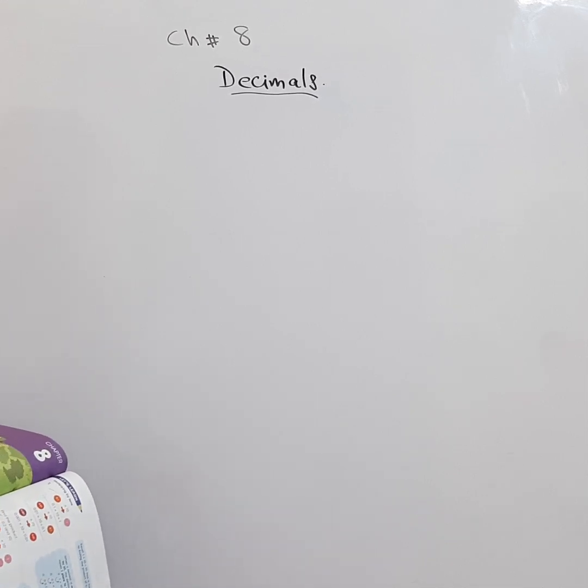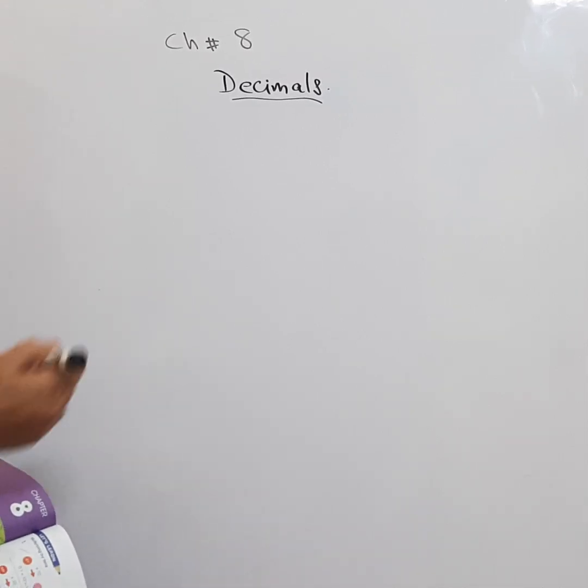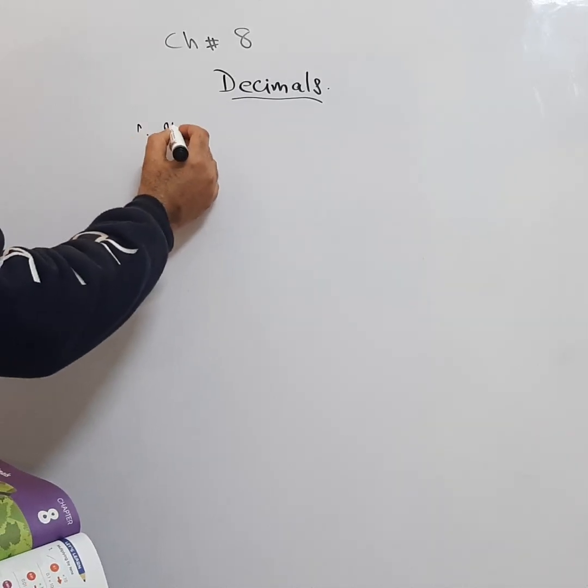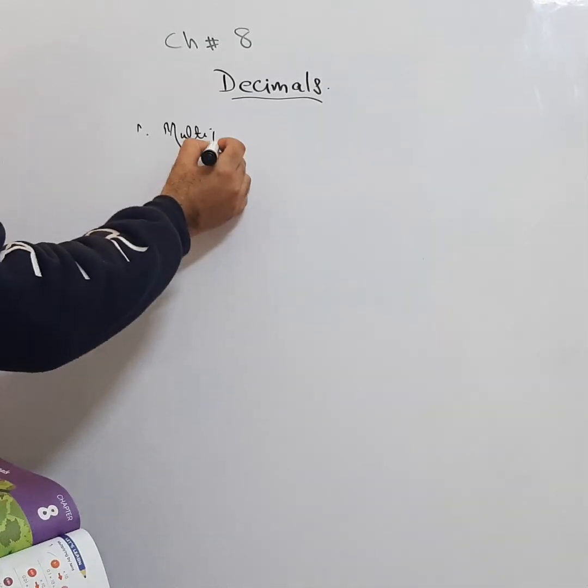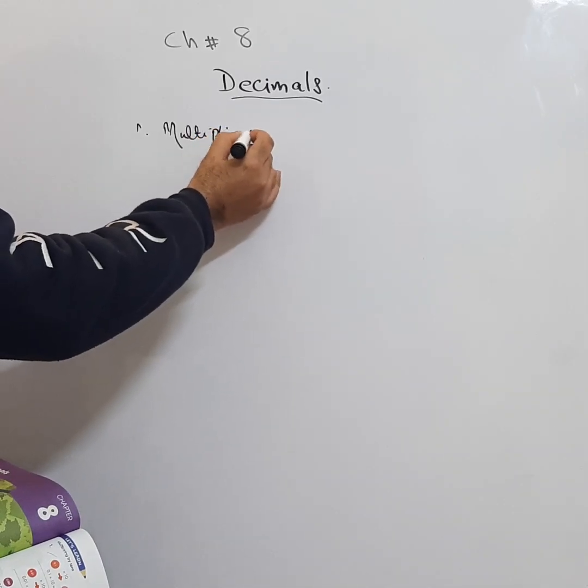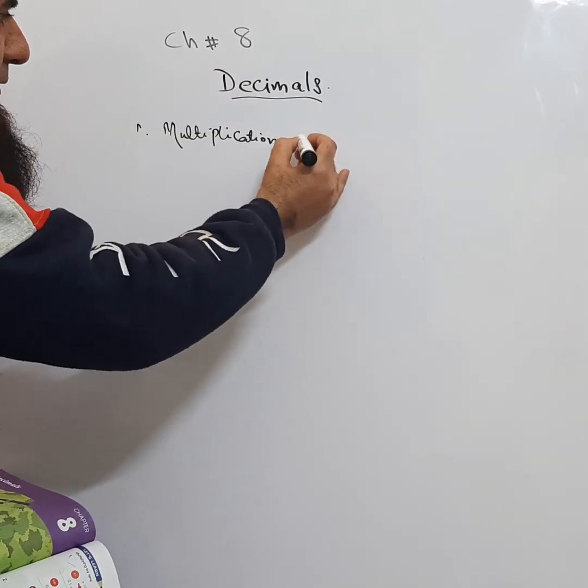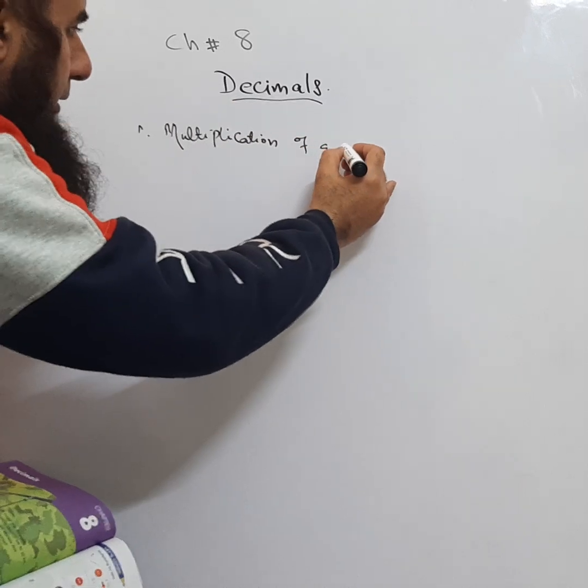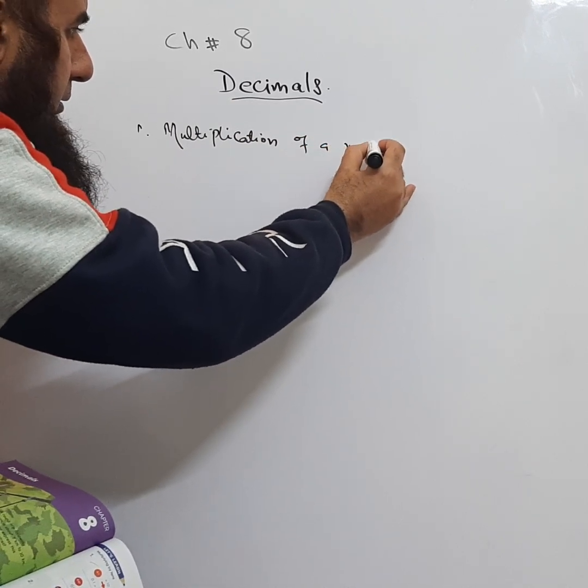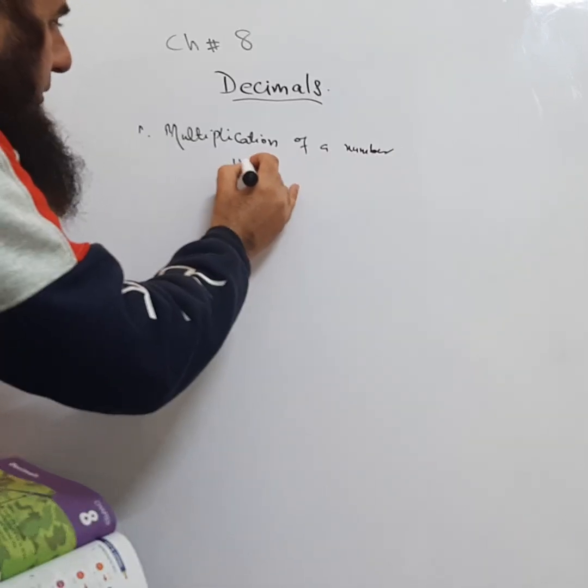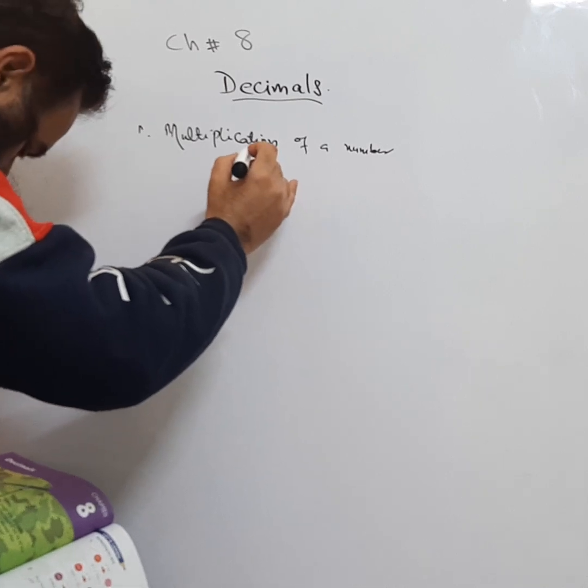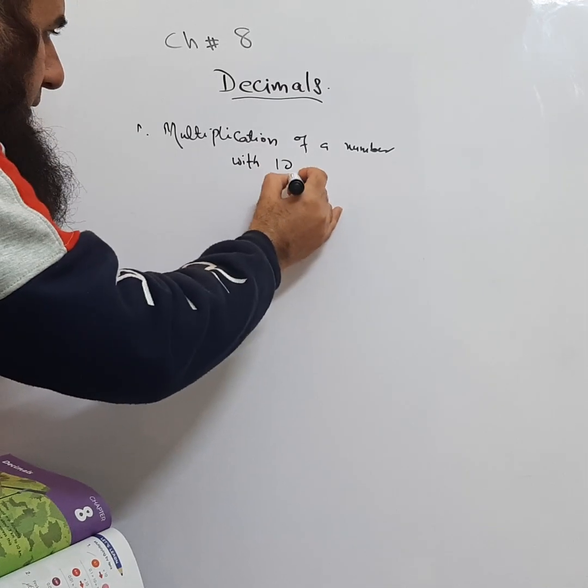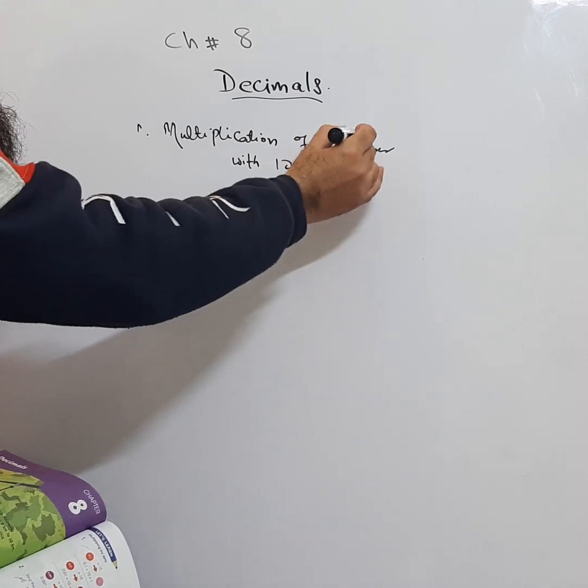In this chapter we will study multiplication of a number with 10, 100, and 1000. Number means a number having a decimal.